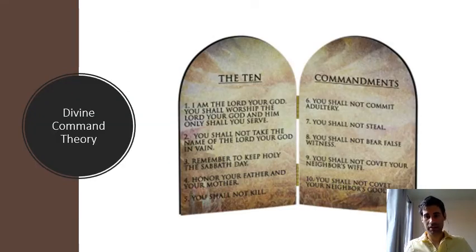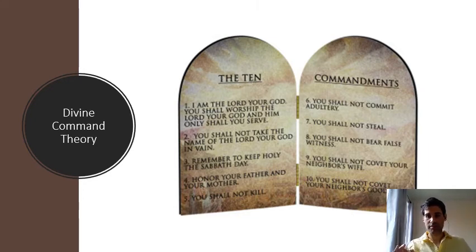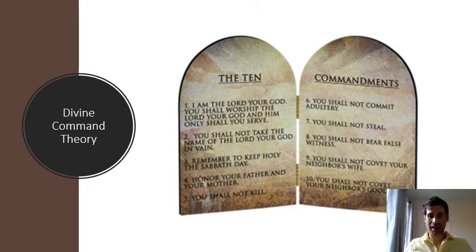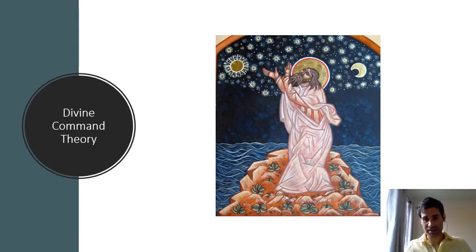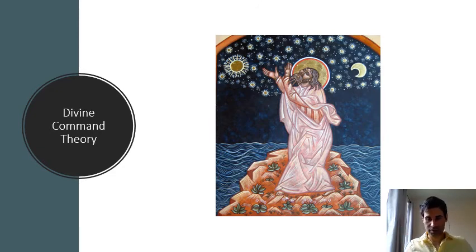According to divine command theorists, God's commands manifest themselves in two different ways. First, God creates what is called a universal moral law — that is, specific rules that all human beings are obligated to follow. One example of this would be the Ten Commandments, the ten rules regarding how human beings are to be in relationship to God and to other human beings. Secondly, God's commandments manifest themselves in the form of natural law. Not only does God set up a divine moral law for human beings to follow, but God also sets up a natural law that all things in the universe are to follow.